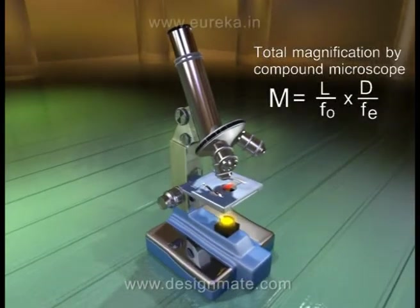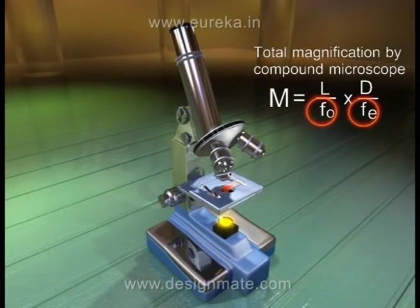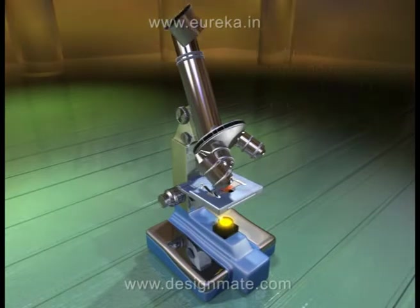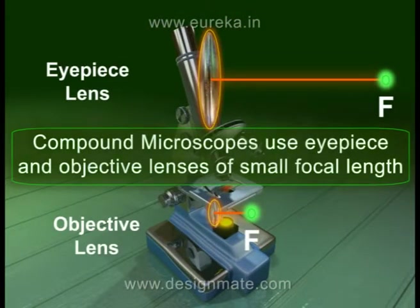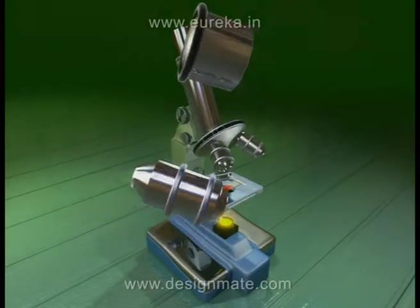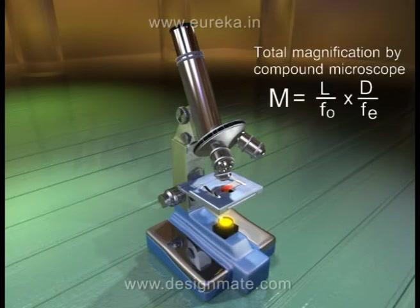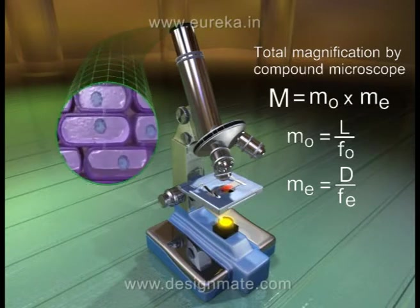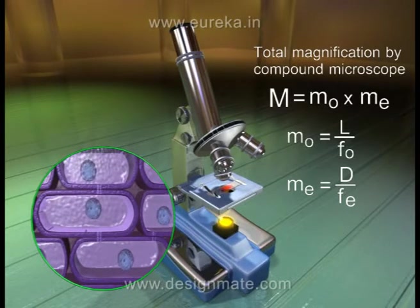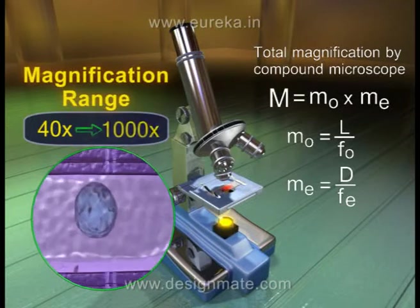Here we can see that the magnification is inversely proportional to the focal length of both the lenses. Hence we can understand why compound microscopes use eyepiece and objective lenses of small focal length. We can also say that the magnification of a compound microscope is the product of the magnifying power of the eyepiece and the objective lens being used. The compound microscope typically has a total magnification range of about 40 to 1000×.